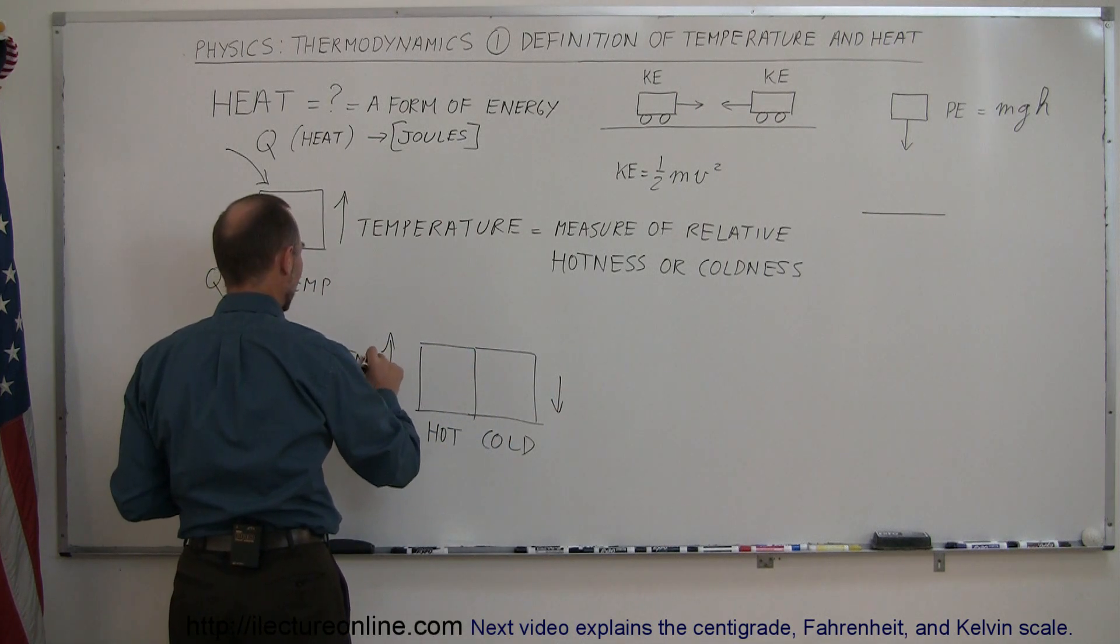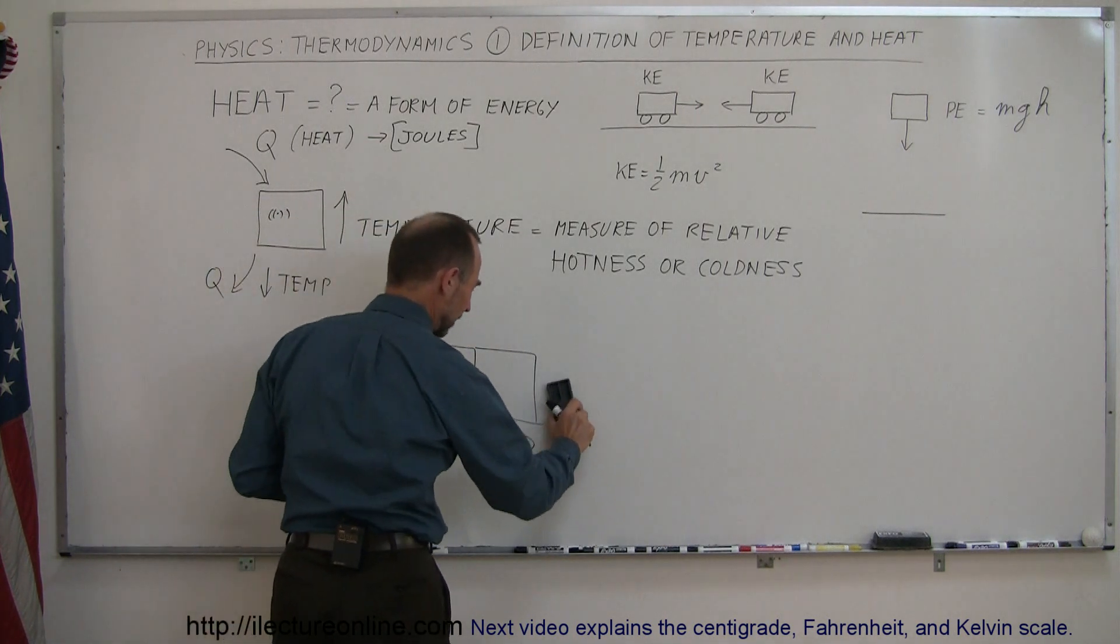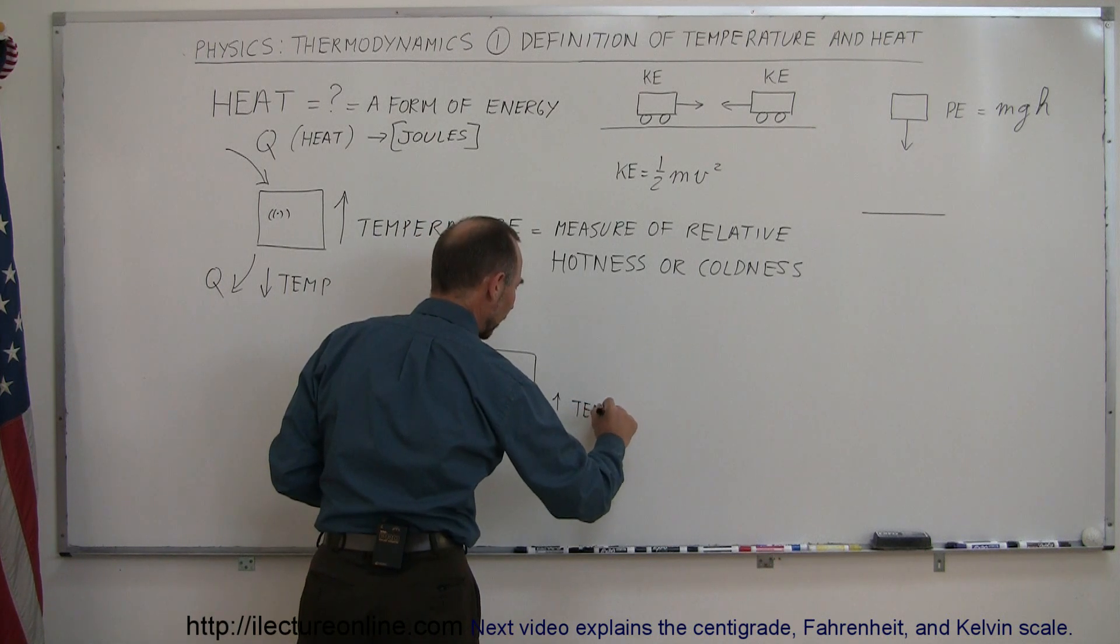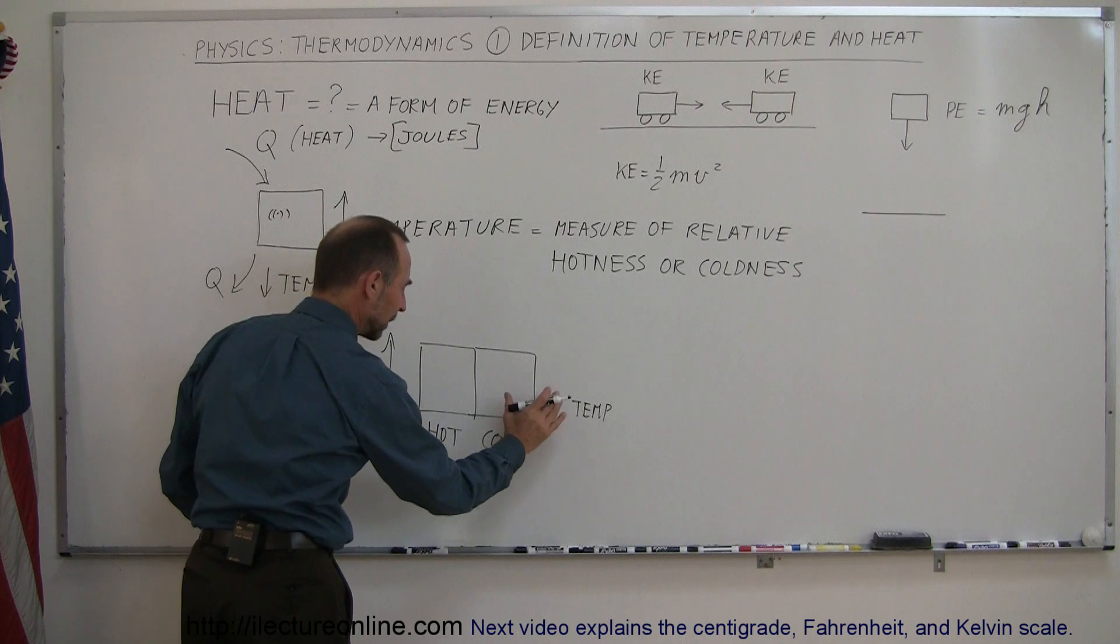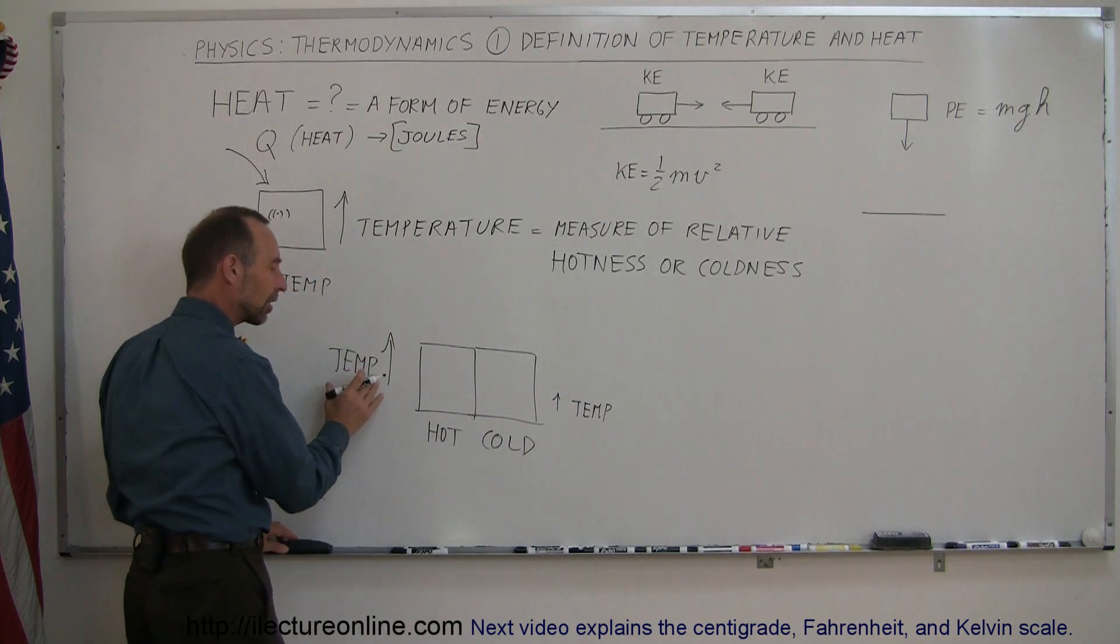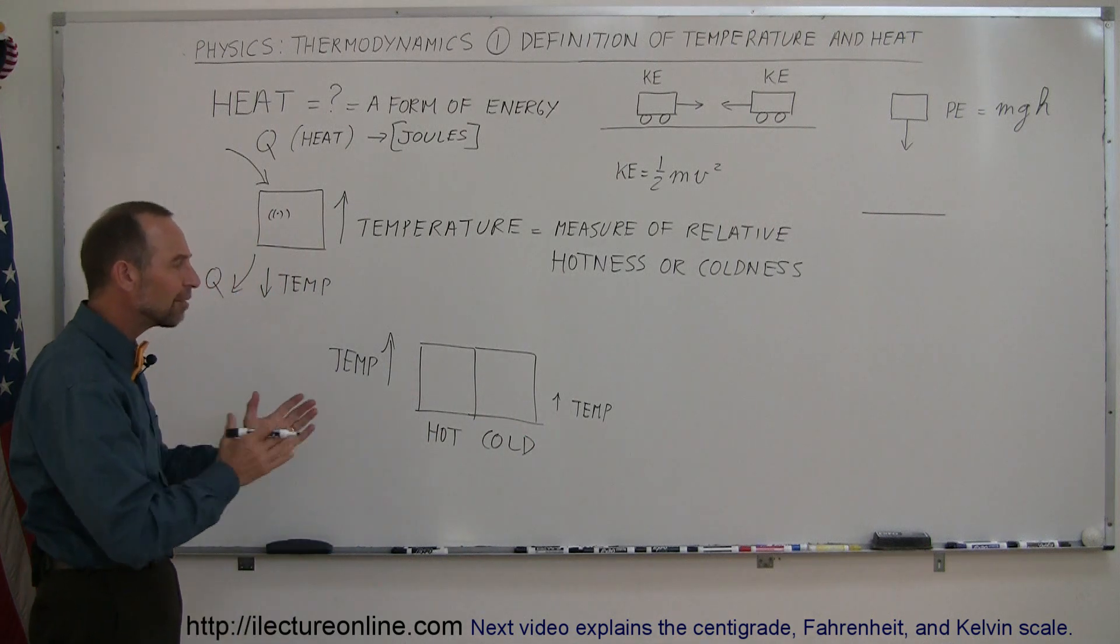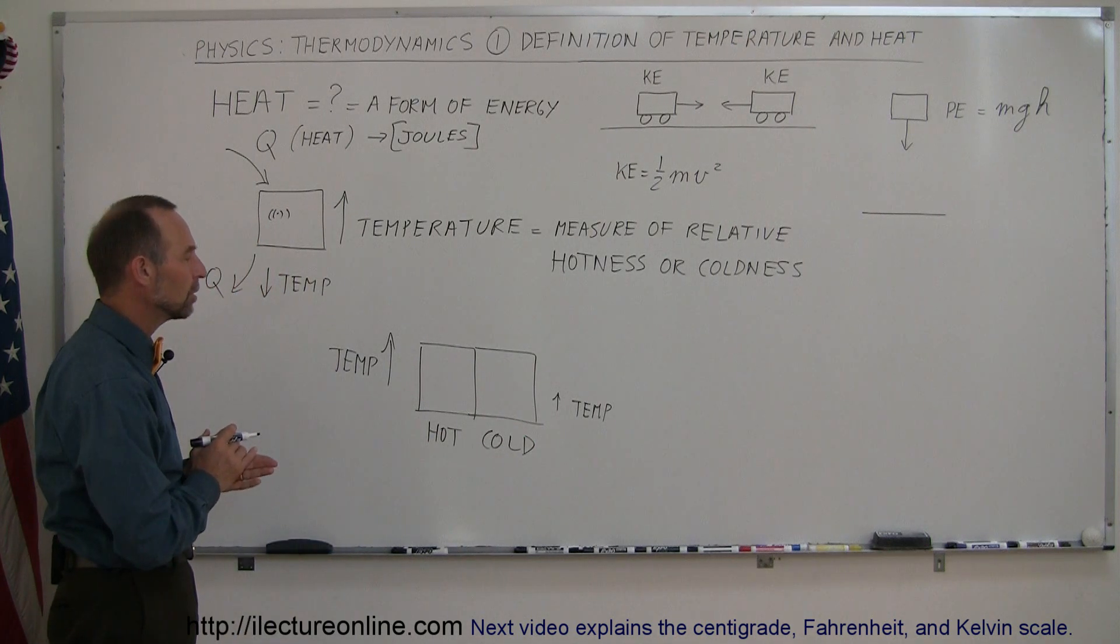So the temperature of this object is greater, and maybe I don't want to do a down arrow, I'll make it up arrow, but I'll make it a shorter up arrow. So you can see that the temperature of this object will be less than the temperature of that object because this object is hot and this object is cold. So it's a relative measure between the two.